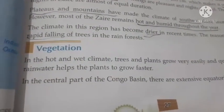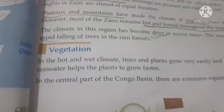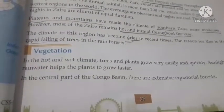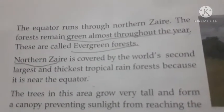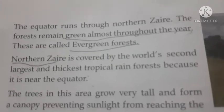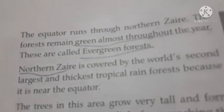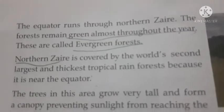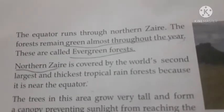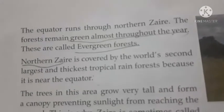In the central part of the Congo basin there are extensive equatorial forests. The equator runs through northern Zaire, and the forest remains green almost throughout the year. These are called evergreen forests.